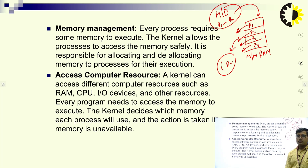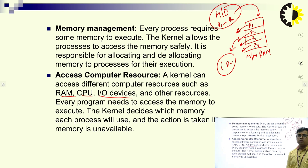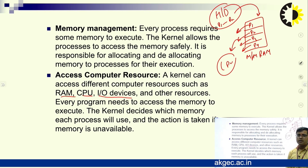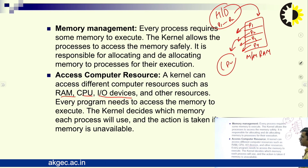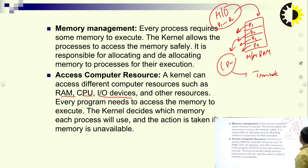Next is accessing computer resources. A kernel can access different computer resources such as RAM, CPU, I/O devices, and other resources. Basically, every program needs to access memory to execute. The kernel decides which memory each process will use and the action to take if memory is unavailable. For example, at this time four processes reside in memory. Whenever these processes are executed one by one and terminated, their space becomes free in main memory and other processes can reside in that particular space.